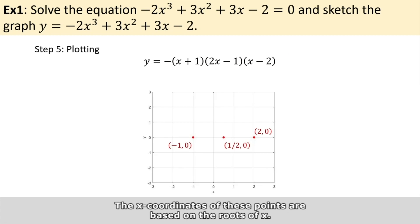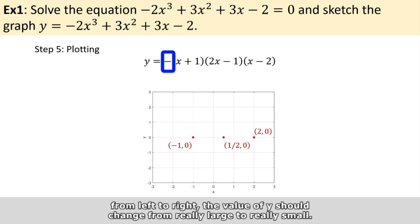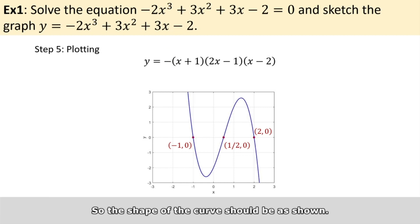The x-coordinates of these points are based on the roots. Because of the negative sign, from left to right, the value of y should start from really large to really small. So the shape of the curve should be as shown.